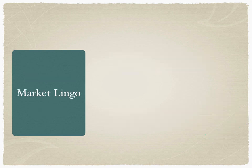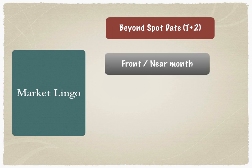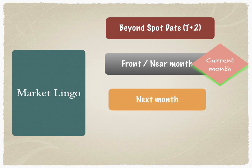Let's understand some market lingo around settlement. Settlement is mandatory and standardized. All futures contracts are called 'futures' because the price lock-in is beyond the spot date. The near month refers to futures expiring in the current month — for example, March 2023. The next month, as the name suggests, is the following month, so futures expiring in April would be called next month.